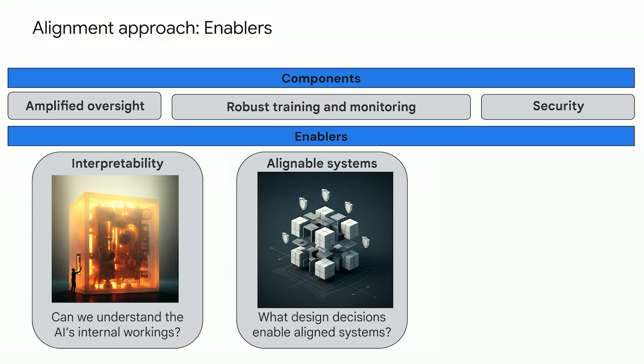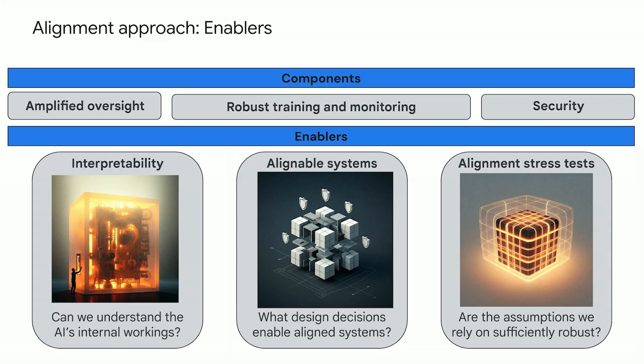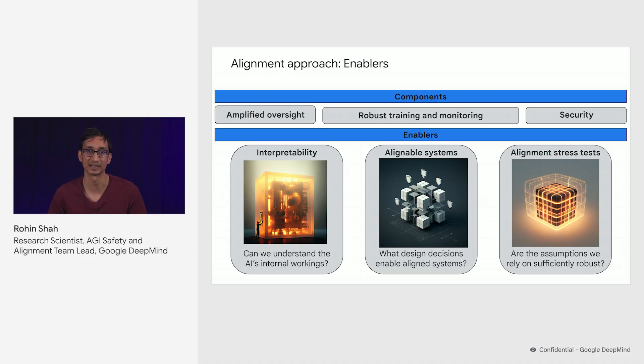With safer design patterns, we consider different ways that AI systems could be built and analyze them to identify which ones make it easier to make the system safe. Finally, alignment stress tests ask the question: given the mitigations that we have put in place, have we really made our system safe? Or is it still possible that the mitigations aren't sufficient to prevent problems from happening? We often tackle this by red teaming — that is, we try to break the mitigations and see how hard it is to do. You can hear more about all of these different areas in the rest of the talks in this series.